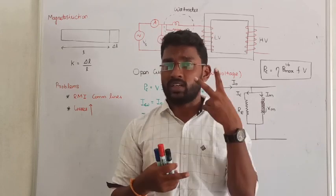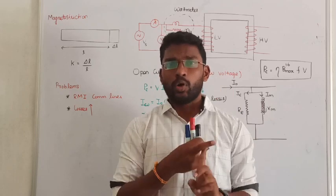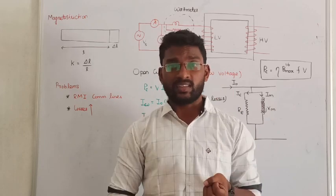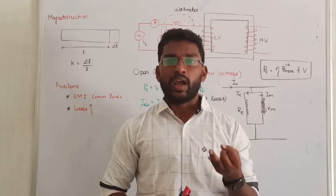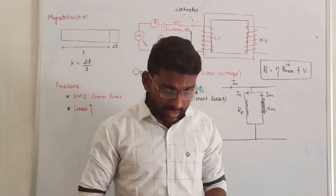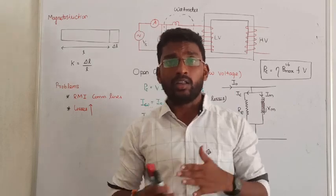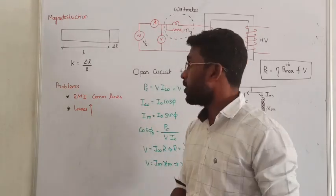Under core loss, we saw that there are two losses. One is called hysteresis loss and another one is called eddy current loss. Let us see all the losses one by one.